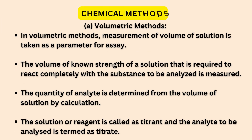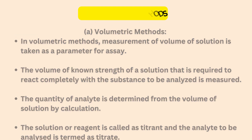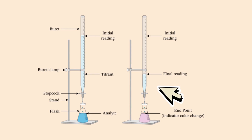Chemical methods — so chemical methods are divided into three major types: volumetric, gravimetric and gasometric. Volumetric methods involve the measurement of volume of solution, which is taken as a parameter. A burette is used as a parameter — the liquid in it is the titrant and the volumetric liquid is the titrate.